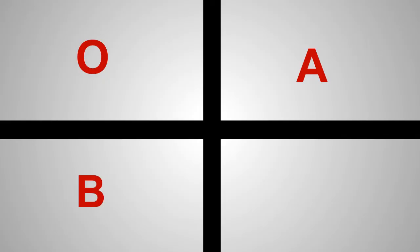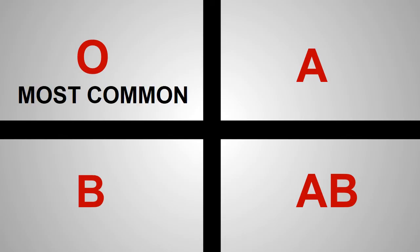There are four blood groups in the ABO system – O, A, B, and AB. The most common blood type is O and the most rare is AB.